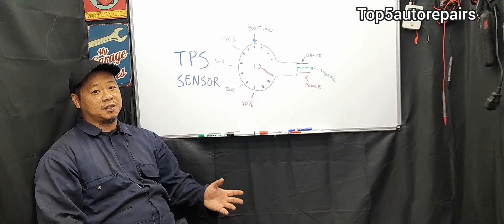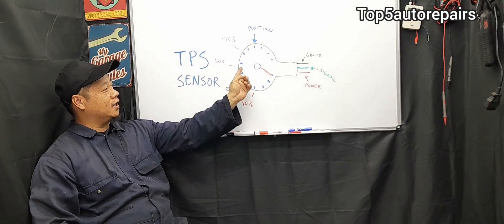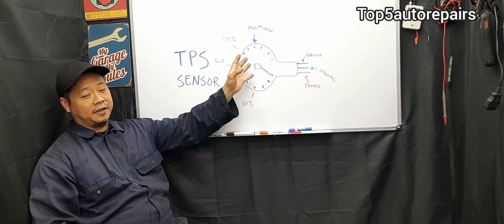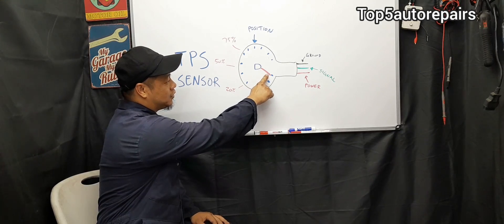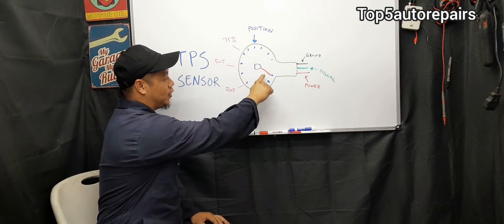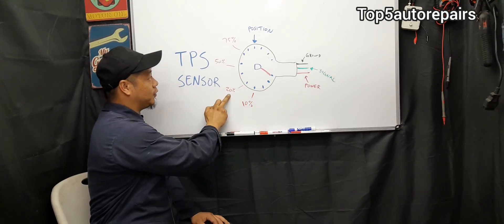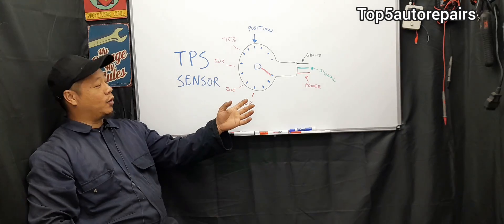The TPS sensor is a potentiometer, and it contains a lot of these little contacts, and each of these contacts is going to represent the percentage that the throttle plate is open. For example, when you step on the gas pedal, this part over here is going to start to sweep, and as the throttle angle is opening, it's going to tell the computer that the throttle angle is open at 20%, 50%, and 75%.